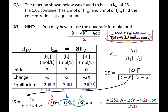Thus only x = 1.7 makes sense. Plugging back in: hydrogen concentration is 2 − 1.7 = 0.3 moles per liter; iodine concentration is 3 − 1.7 = 1.3 moles per liter; and hydrogen iodide concentration is 2 × 1.7 = 3.4 moles per liter at equilibrium.